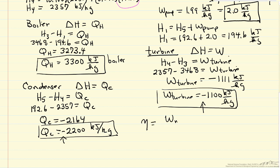Finally, we calculate efficiency. Efficiency equals the absolute value of net work divided by Q_H. The net work is the pump work plus the turbine work, and the signs matter. Substituting those values gives an efficiency of 33%.